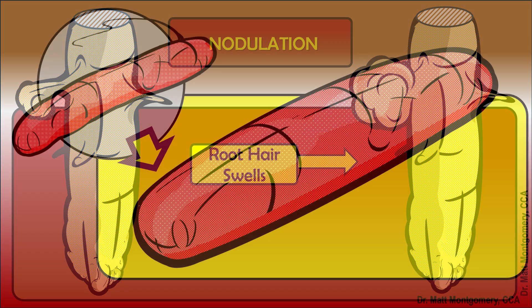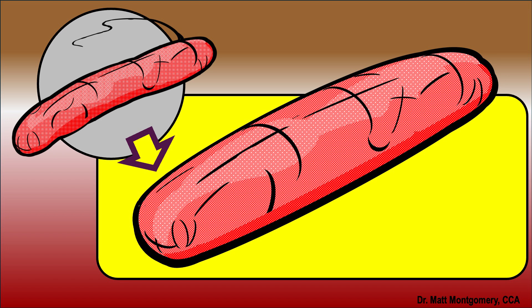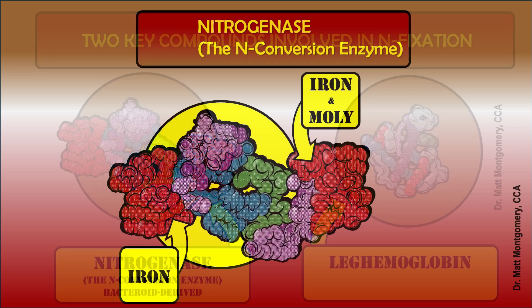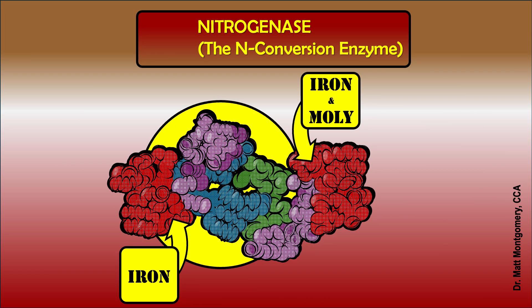Those bacteria are going to change — they're going to lose their tails and become a little different in appearance. There are two important compounds they use to do this job. One is called nitrogenase, the enzyme that does the job of splitting nitrogen apart and eventually transforming it into ammonia. But it has a critical flaw: if it comes in proximity to too much oxygen, that nitrogenase will shut down.